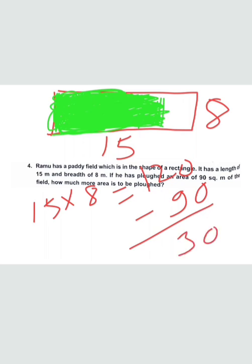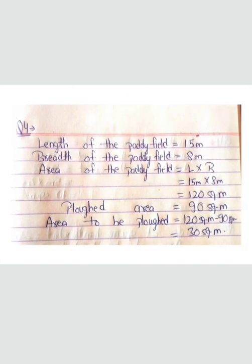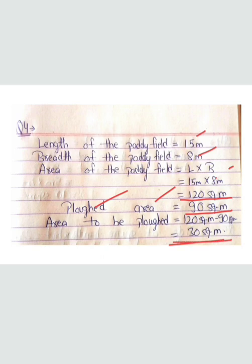Let's see how we write it: length of the paddy field is 15 meters, breadth is 8 meters. Area of the paddy field equals length × breadth = 15 × 8 = 120 square meters. Total area is 120 square meters. Ploughed area is 90 square meters. Area yet to be ploughed equals 120 minus 90 = 30 square meters.